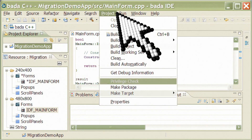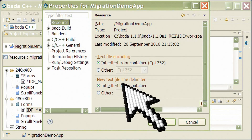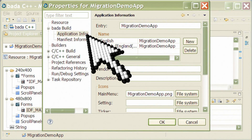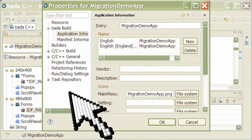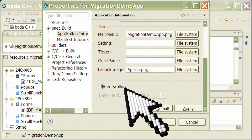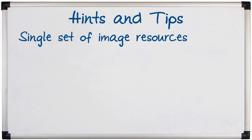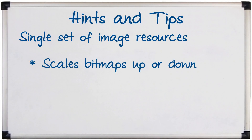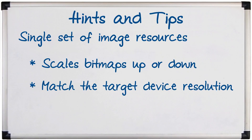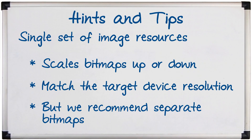To enable auto scaling, right click on your project name in the project explorer, go to Properties, then Bada Build and Application Information. At the bottom of this dialog you can find the checkbox for enabling auto scaling — tick this and click Apply. In addition, you can use a single set of image resources corresponding to one resolution, and the Bada platform automatically scales them to match the target device resolution. However, since auto scaling for bitmap resources reduces their quality, we recommend creating bitmap resources separately for each possible device resolution.